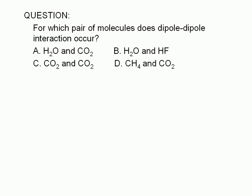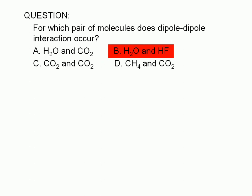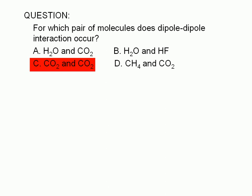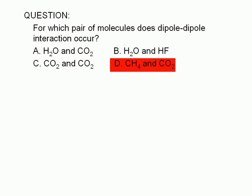For which pair of molecules does dipole-dipole interaction occur? A: a water molecule and a carbon dioxide molecule. B: a water molecule and a hydrogen fluoride molecule. C: two carbon dioxide molecules. Or D: a methane molecule and a carbon dioxide molecule.